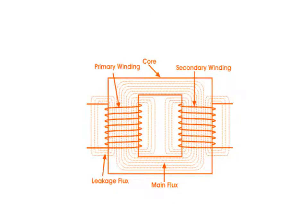This is the diagram of the transformer. The left side winding is the primary winding, which is connected to the supply. The right side is the secondary winding, which is connected to the load. The central metal part is the core. Whatever flux is generated in the primary winding flows through the core of the transformer and links with the secondary winding.